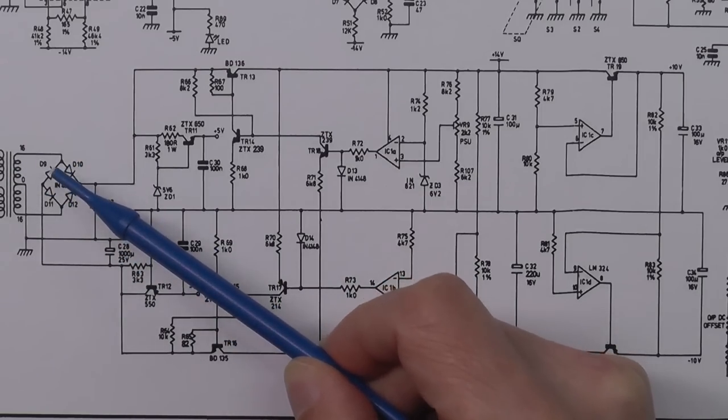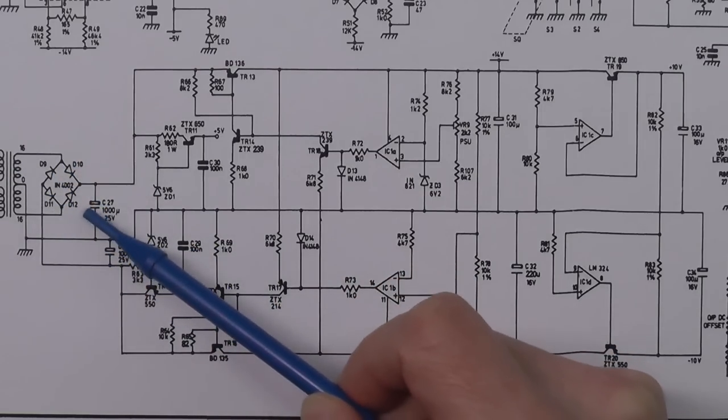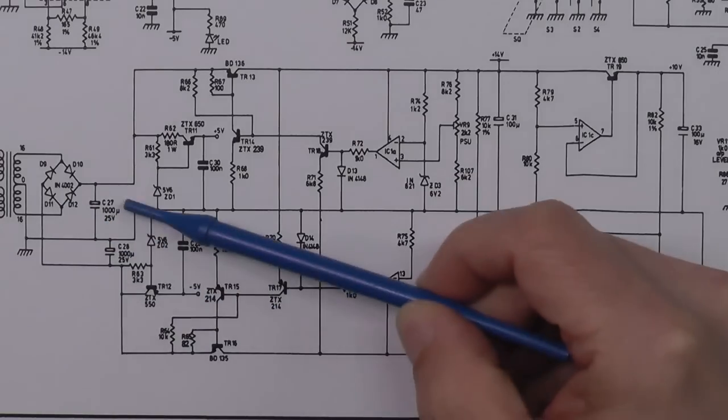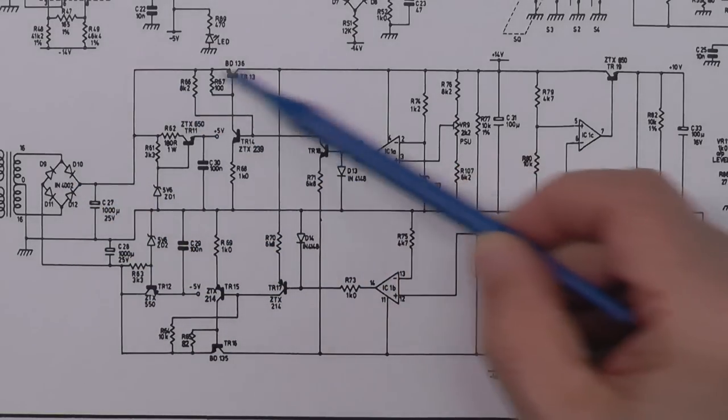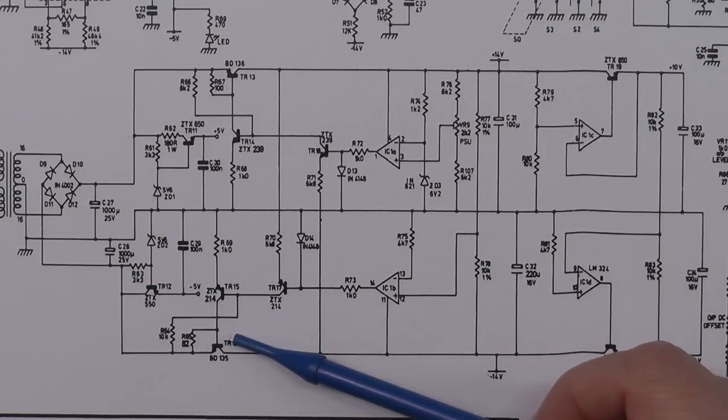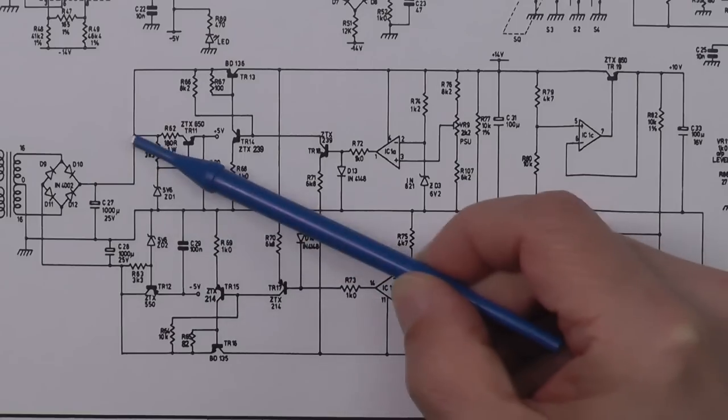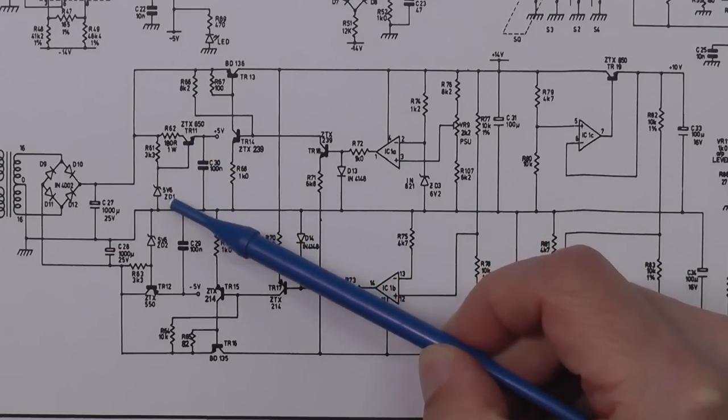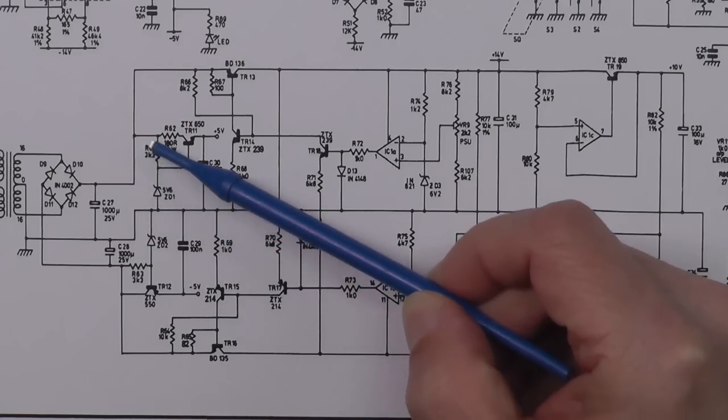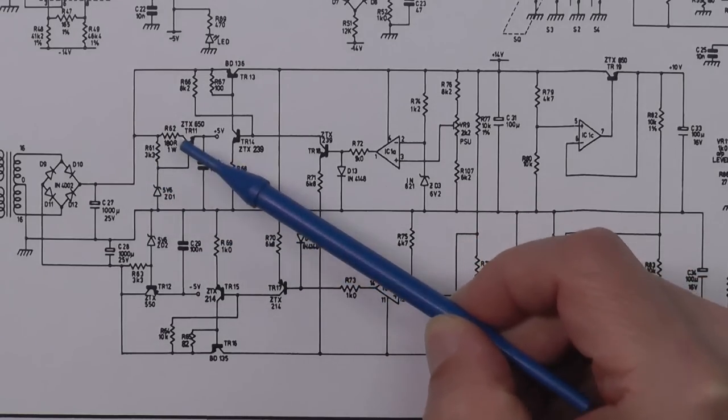On the left we've got the transformer—a center-tapped secondary to ground with either end of that secondary winding straight onto the bridge rectifier. That's going to produce positive and negative unregulated DC with a couple of bulk capacitors, one on each of those.